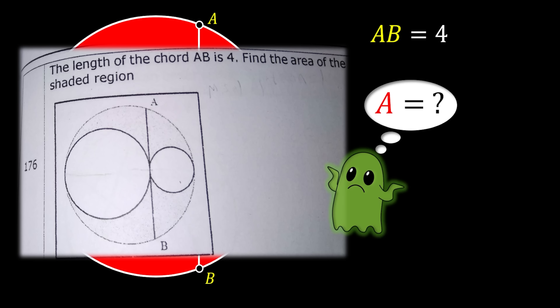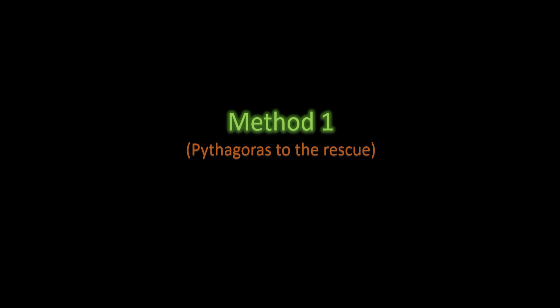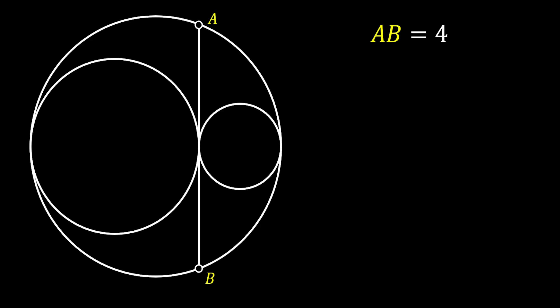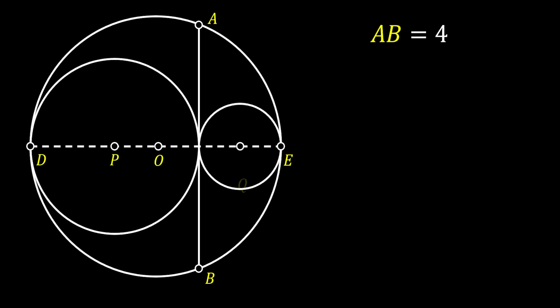I will offer you three different methods to solve this particular problem. In the first method, we're going to use the Pythagorean theorem to get to our solution. First, I will draw the vertical diameter of our big circle, and I will label the vertices of this diameter as D and E. Next, I will label the center of our big outer circle as O and the centers of the two smaller inner circles as P and Q. I will also label the point of contact between the two inner circles, which is also a tangency point, as C.